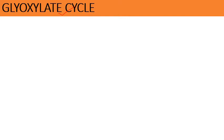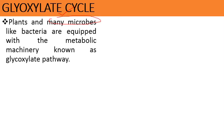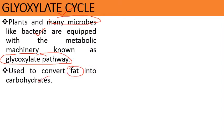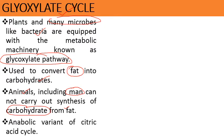The glyoxylate pathway is a special metabolic machinery present in some microbes like bacteria and in some plants, in which fat is converted into carbohydrate. This pathway is an anabolic variant of the Krebs cycle. This machinery is not present in animals, including humans, so animals cannot carry out the synthesis of carbohydrate from fats. The glyoxylate cycle is similar to the citric acid cycle up to the first few steps.